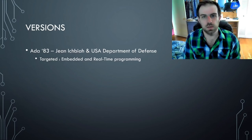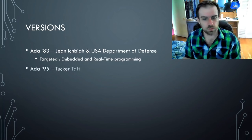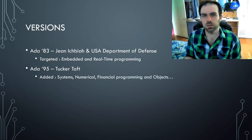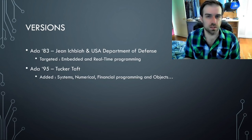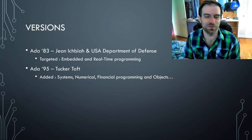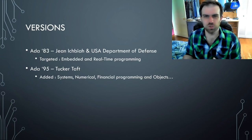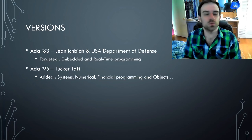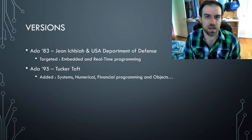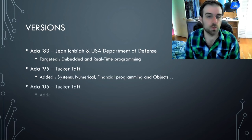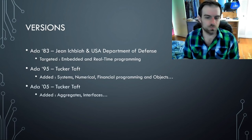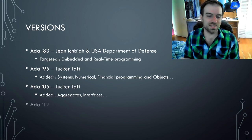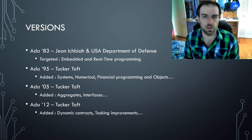Ada 83 pretty much only targeted embedded and real-time systems — it was overwhelmingly just a military-focused language. But there were some really good things about the language, so it was revised in a way that expanded it greatly for other purposes. This would be the first general-purpose version of Ada, Ada 95, and was led by a small team led by Tucker Taft. It was revised again in 2004–2005, which added some more advanced features, and revised again for 2012, adding even more.